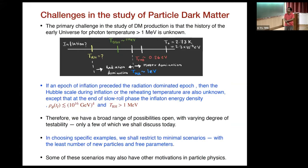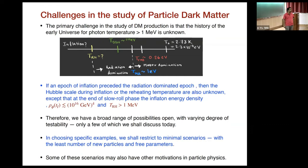If there was an epoch of inflation which preceded the radiation-dominated era, then the relevant quantities are the Hubble scale during inflation and the reheat temperature, both of which are also unknown. There is an upper bound on the inflaton energy density at the end of slow roll, and a lower bound on the reheat temperature. Given this uncertainty about early universe cosmology, we have a very broad range of possibilities with varying degrees of testability, and we shall discuss only a few of them today.